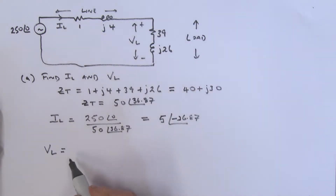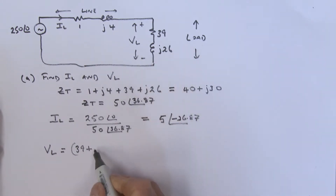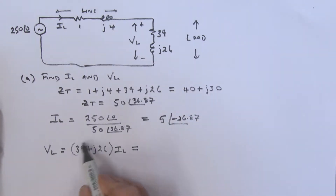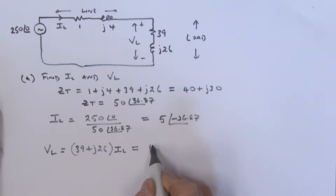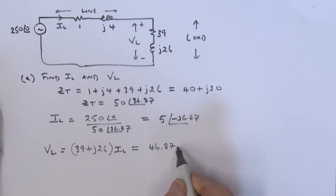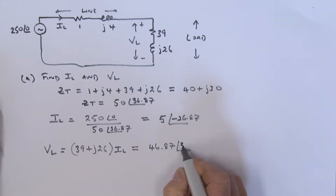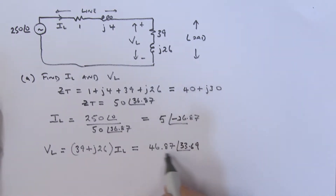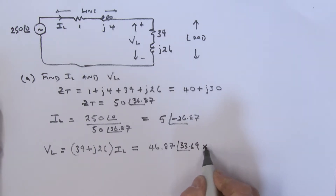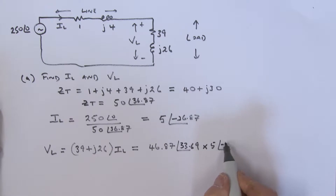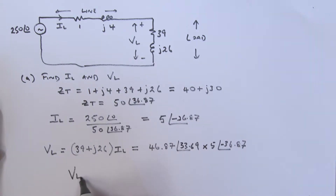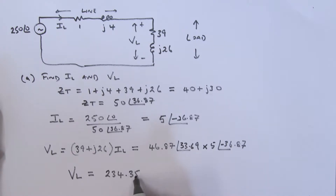So that's IL. The voltage VL is equal to the current times the load impedance, which is 39 + j26 multiplied by IL. Converting 39 + j26 to polar form gives 46.87 at an angle of 33.69 degrees, and that is multiplied by IL, which is 5 at an angle of minus 36.87 degrees.